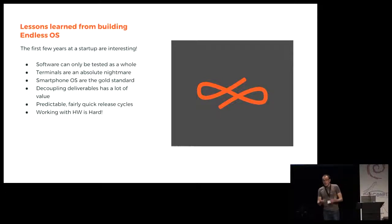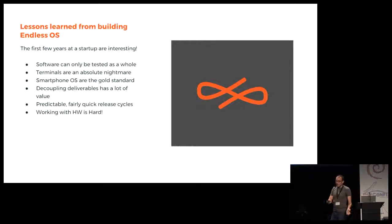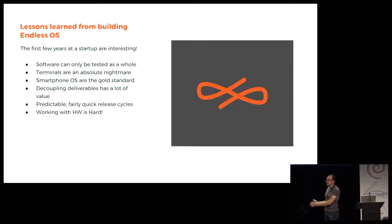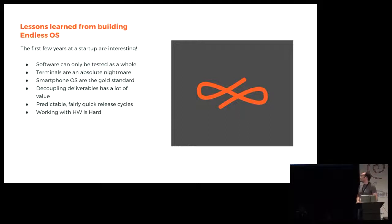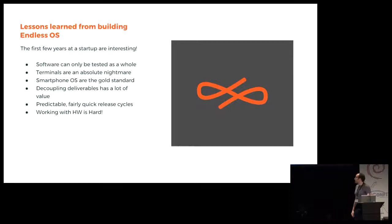Decoupling deliverables has a ton of value. The moment we were able to say all the applications don't need to follow the OS — they don't need to stay up to date with the libraries provided by the operating system, they can move at their own pace and be released whenever — and the OS can evolve separately. Once you figure out the interfaces you need to do that, it's absolutely super valuable. I think it would be valuable for other distributions as well.